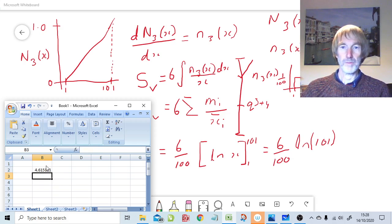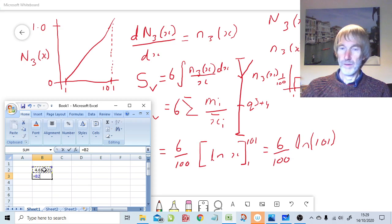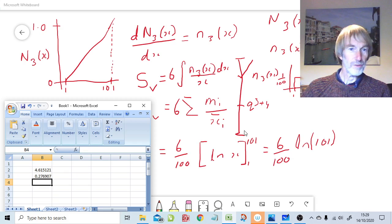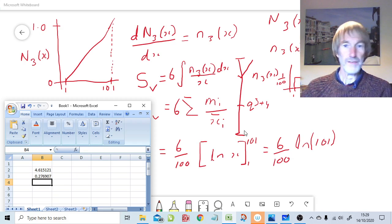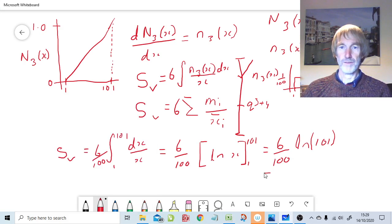So that then becomes six times by previous cell times by six divided by 100 gives us the value 0.277. So if we can come back here gives us the value of 0.277 microns to the minus one.